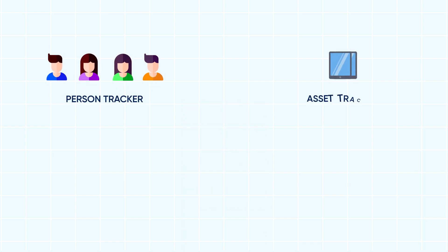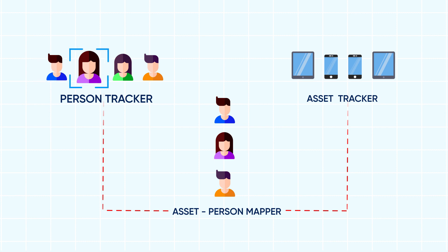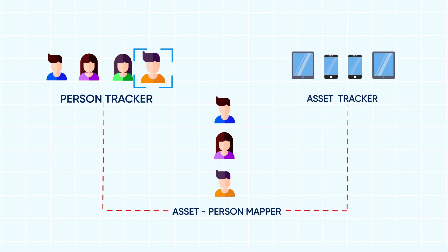The application comprises three modules: Person Tracker, Asset Tracker, and Asset Person Mapper. The Person Tracker module tracks and monitors visitors to the device lab. It uses computer vision algorithms to detect facial features and compares them with a database of face profiles. The system keeps learning from the video streams and constantly trains and updates data sets.